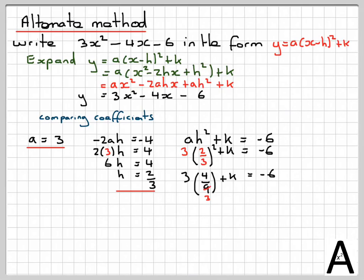3 and the 9 will cancel. And therefore we're going to get k is equal to minus 6, so that's 4 over 3, taking it to the other side, and we end up with this same sum again. Minus 18 over 3, take away 4 over 3, which is going to give me minus 22 over 3.